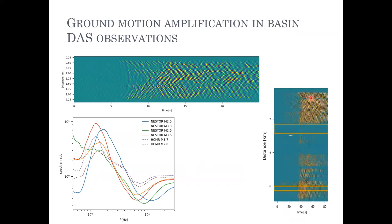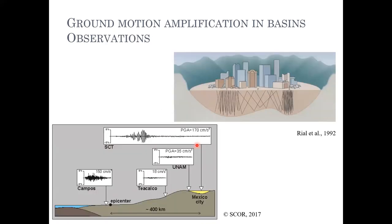Another important difference with DAS data is that we don't record ground motions like seismometers — we record strains, which are specifically very sensitive to the velocity of the medium. If the velocity is very low, strains will be very high, and vice versa. We can use this information to emphasize the amplification or deamplification along the fiber. This is well demonstrated by the Mexico City 2017 earthquake, a very good example of how sedimentary basins amplify ground motions and how damaging they can be.